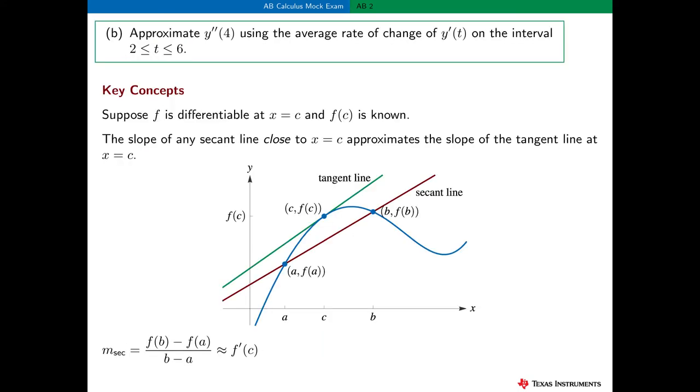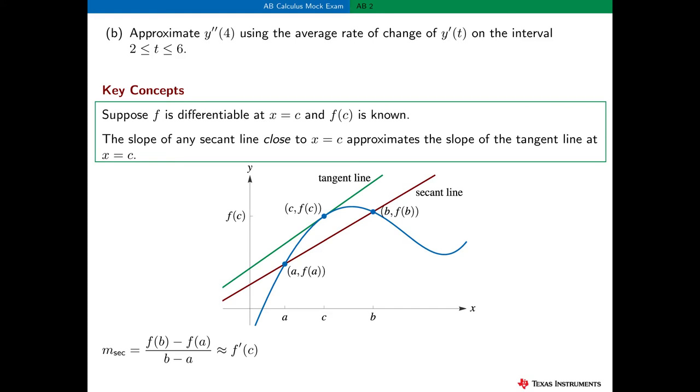In part b, we need to approximate y''(4) by using the average rate of change of y'(t) on the interval 2 to 6. Now this is a pretty straightforward question, but I think it requires one very important concept. Suppose f is differentiable at x = c. Although we don't often stress this in an AP calculus class, the slope of any secant line close to x = c can be used as an approximation to the slope of the tangent line at x = c. And of course, as we choose points closer and closer to x = c, the approximation gets better and better.